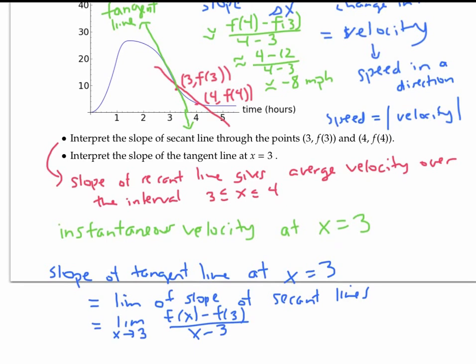Well, each of these ratios represents an average velocity on the interval from three to x. And so the limit is the limit of average velocities on tinier and tinier intervals of time: one minute, one second, one hundredth of a second.